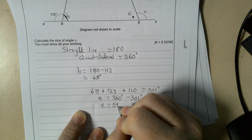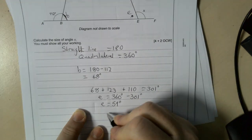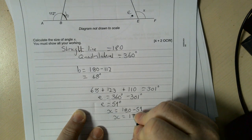And now I know E plus X are on the straight line together, so they make 180 degrees. So X is going to be 180 take away 59, which is 121 degrees.